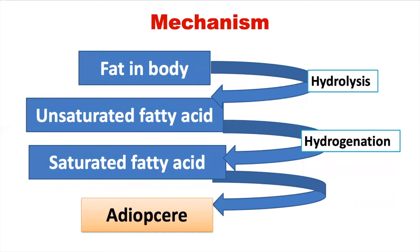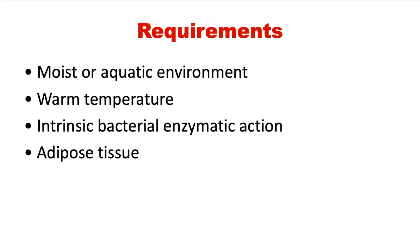Let us see the mechanism. Fat in the body undergoes hydrolysis and formation of unsaturated fatty acids. From there, hydrogenation occurs and saturated fatty acids are formed. From saturated fatty acids, Adipocere is formed. Requirements: a moist or aquatic environment is necessary, along with warm temperature, intrinsic bacterial enzymatic action, and adipose tissues.